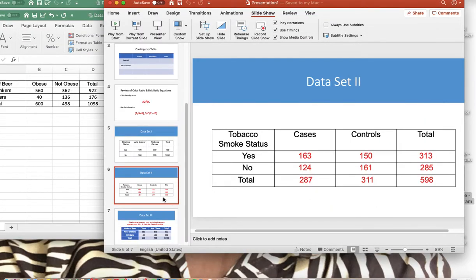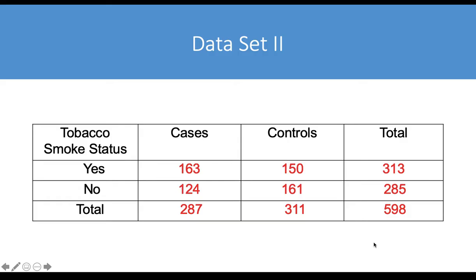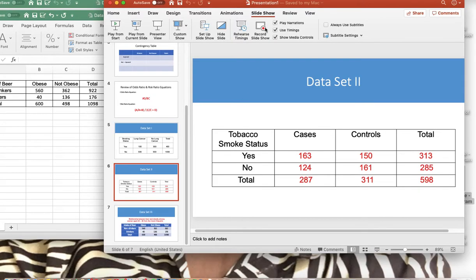The second dataset is a case-control study examining smoking status and the risk of developing asthma. For a case-control study, you can only calculate the odds ratio. We will work through this together.